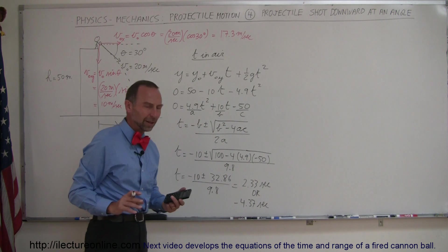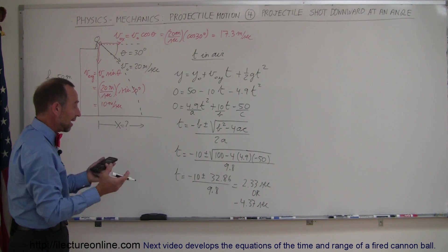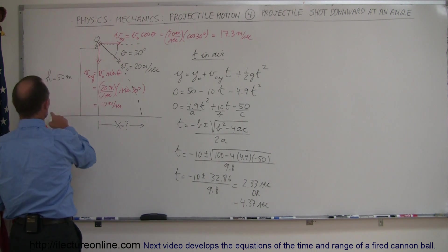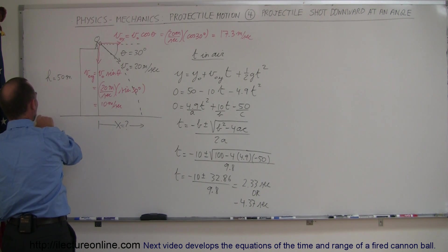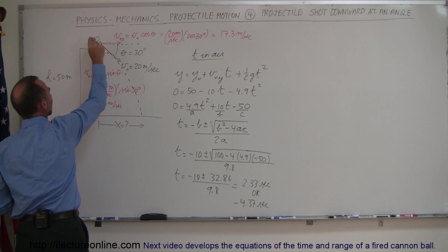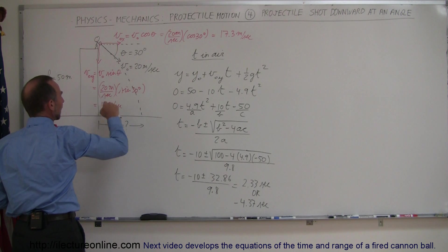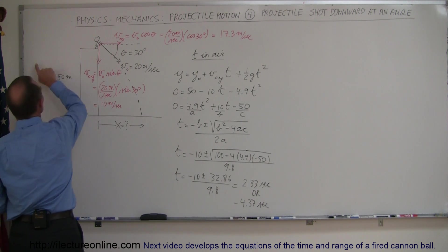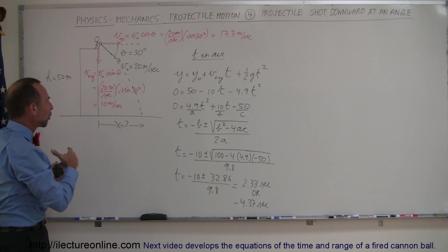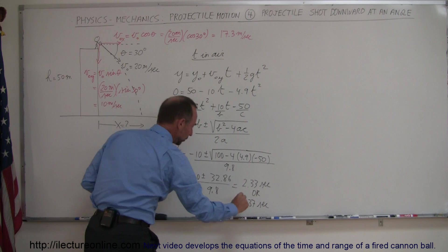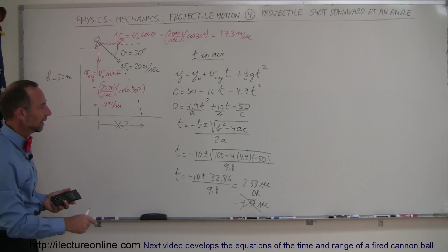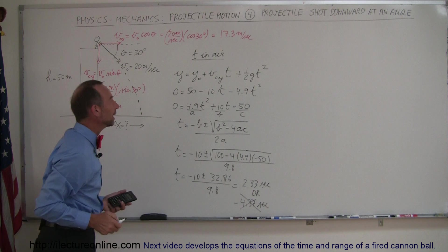So you may say, well that doesn't make a lot of sense, how can you have a negative answer in time? Well what happens is if you were to throw the projectile from the ground upward so that it goes up to a particular height, turns around, comes back down at this particular angle with that initial velocity right here, it would take 4.37 seconds from here to reach that point. So that's kind of the imaginary negative portion of this problem which we promptly ignore. We just have to realize, oh that's where that came from.